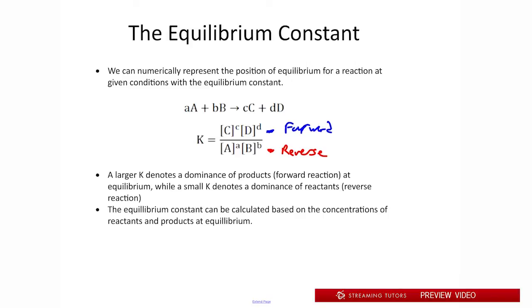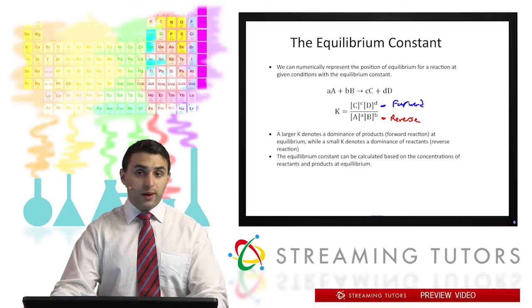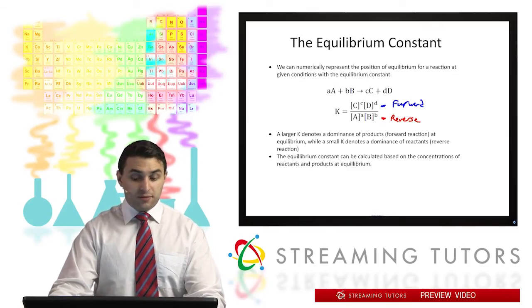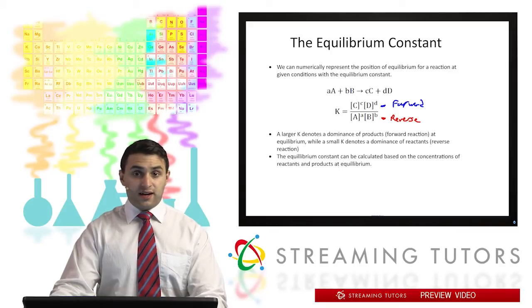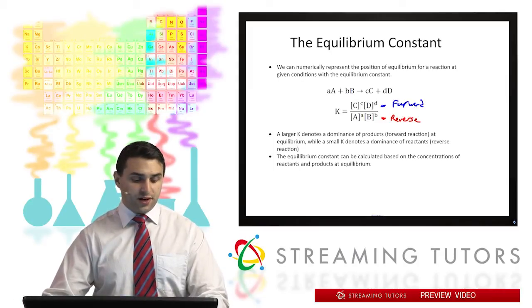The equilibrium constant can either be given to you in a problem, or sometimes you'll have to find it, and that can be calculated based on concentrations that are found at equilibrium. So let's say you have a reaction going on, and you wait until the concentrations stop changing and measure them. If you measure them and put them into this equation, you'll be able to solve for the equilibrium constant. The equilibrium constant is something we're going to be utilizing a lot in this chapter and the next few chapters, especially with things like acids and bases that you'll see in the next few videos.